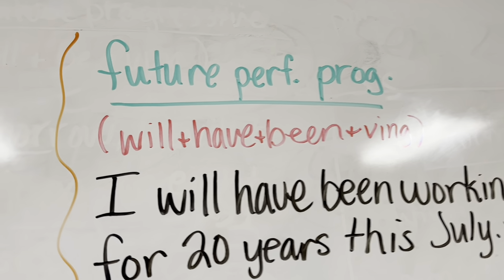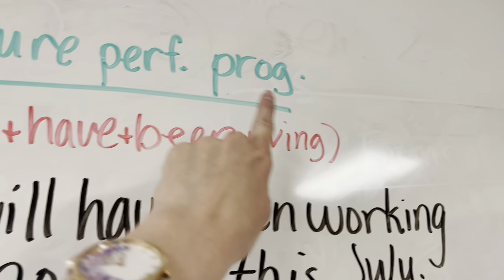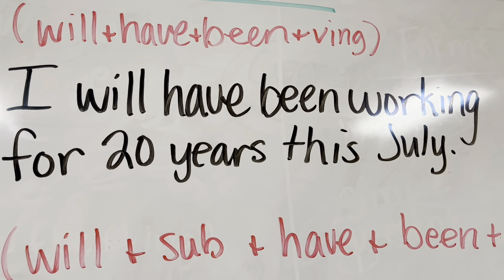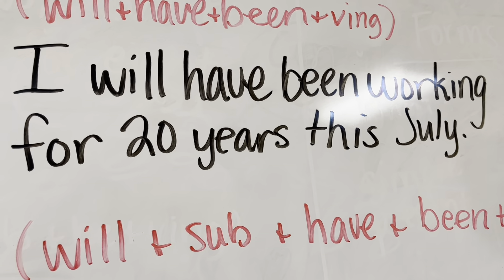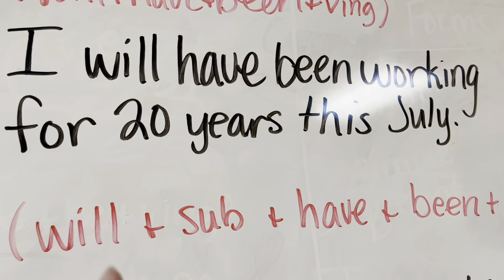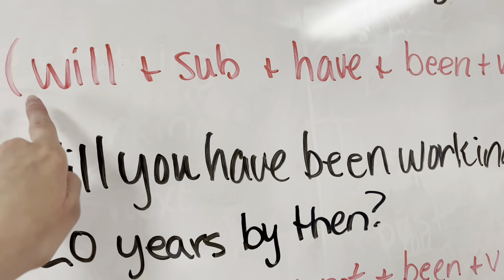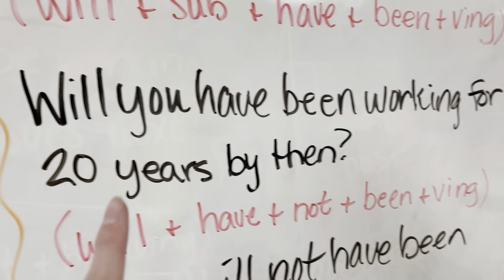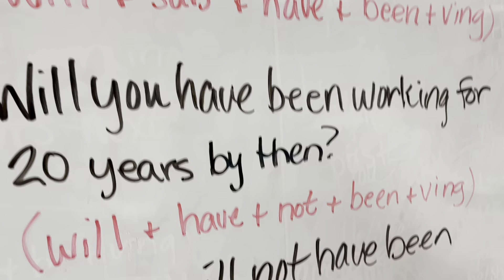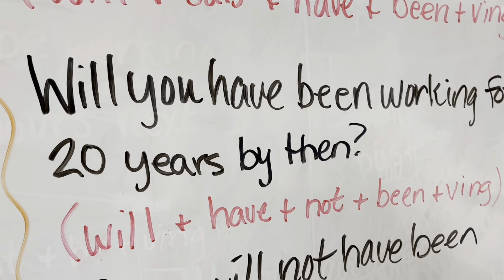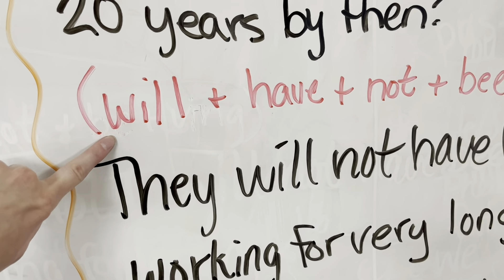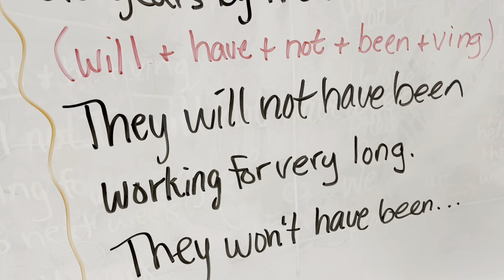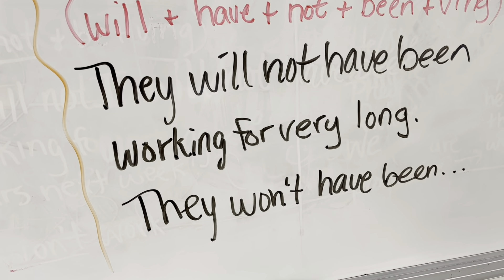Future perfect progressive: will have been plus verb form. I will have been working for 20 years this July — meaning this is the person's 20th work anniversary. As a question: will, subject, have, been, and the verb form — will you have been working for 20 years by then? As a negative: will not have been plus verb form — they will not have been working for very long. They won't have been working for very long.